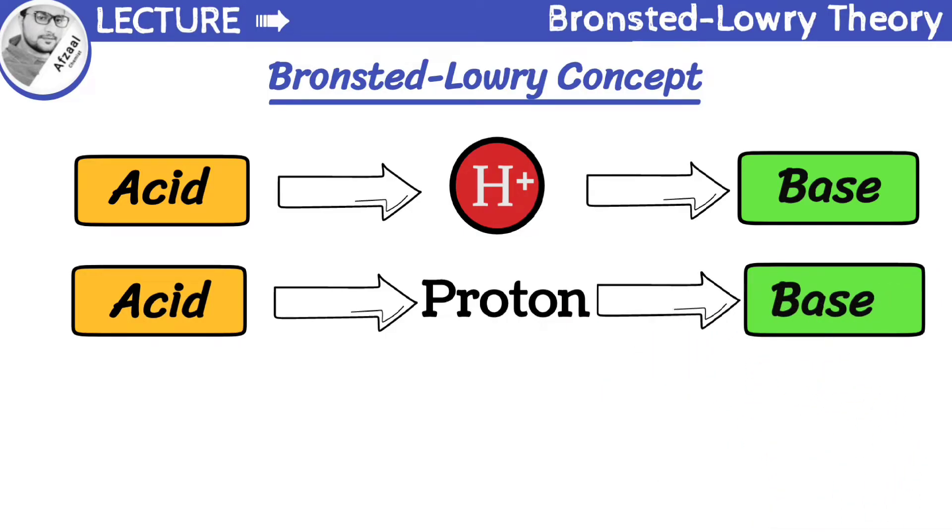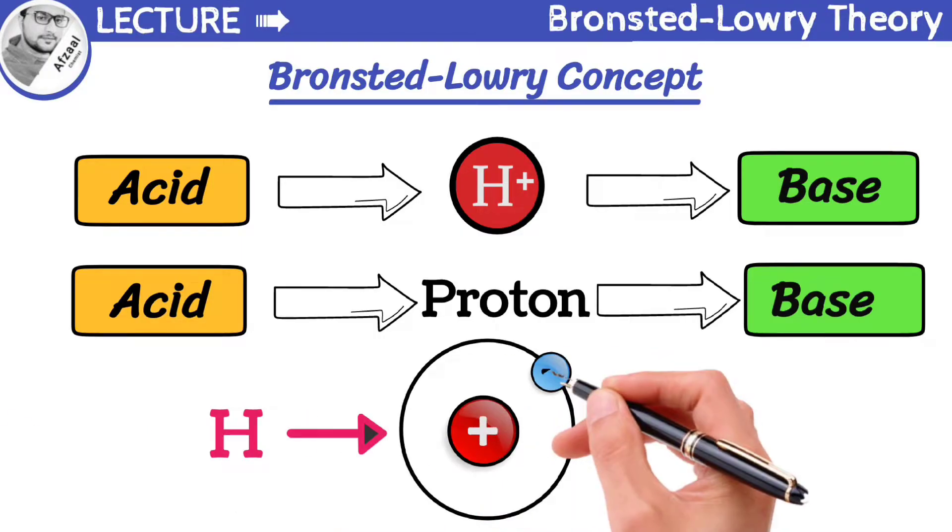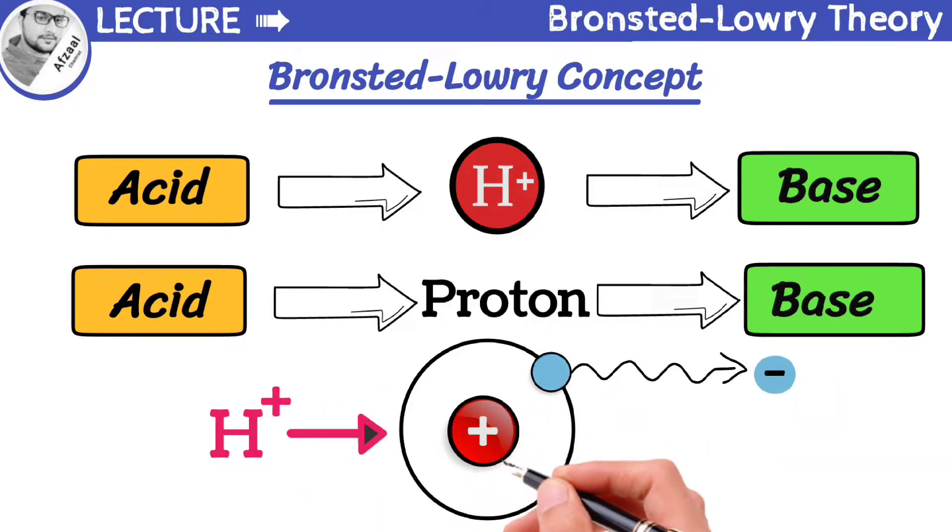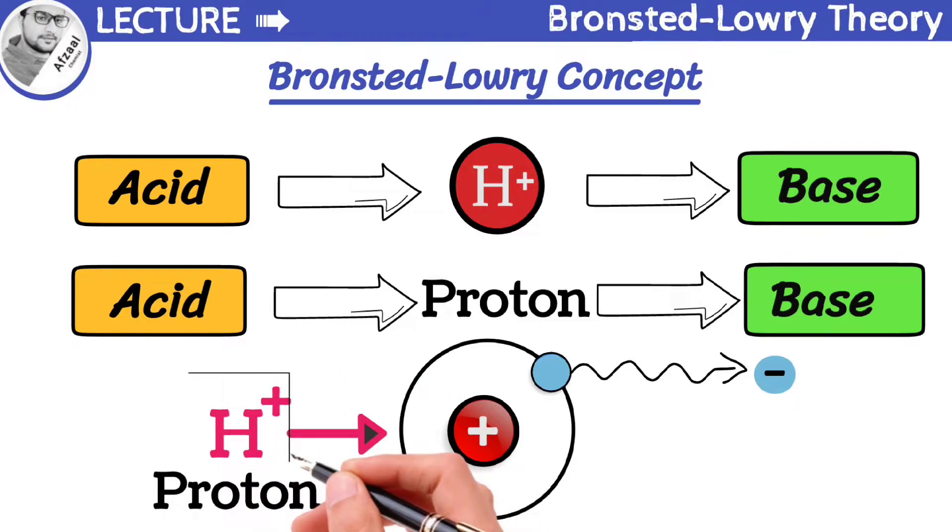But wait, what exactly is a proton? An atom of hydrogen contains one proton, one electron. When hydrogen loses an electron to become H+ ion, only a proton remains. So, H+ ion is also known as proton. Therefore, in simpler terms, a proton is a hydrogen ion without its electron.